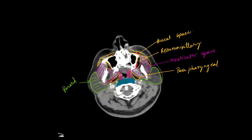That's where we'll have the fossa of Rosenmüller and other things. One more space we haven't talked about yet is the carotid space.